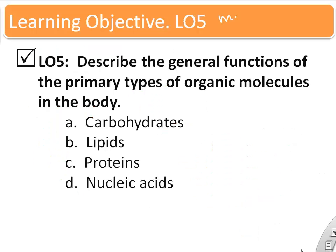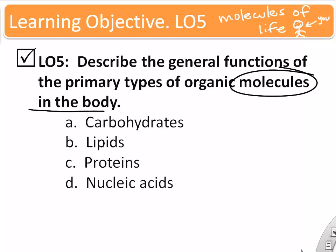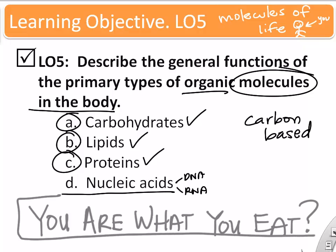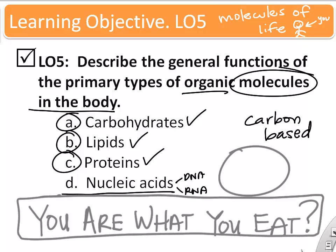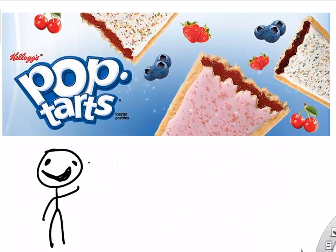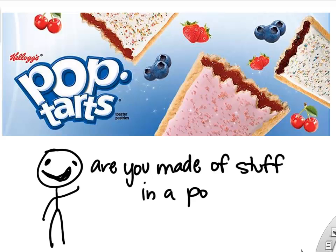The next learning objectives look at common molecules we need to understand physiology: carbohydrates, lipids, proteins, and nucleic acids. You are what you eat — we eat a lot of carbohydrates, lipids, and proteins. If you eat a Pop-Tart, let's look at its label. You can see fats and cholesterol, which are lipids, carbohydrates including fibers and sugars, and proteins made of amino acids.